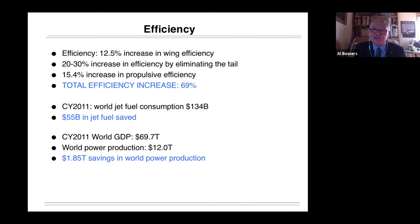Real quick, there's a total efficiency increase. If you do everything, the increase in the wing efficiency, eliminate the tail, and then increase the propulsive efficiency. For aircraft, the total efficiency increase is almost 70%. In 2011, world jet fuel consumption was about $134 billion. I think today it's about $180 billion. Last year, of course, was a disaster for everyone. But the current consumption rate is right around $180 billion. At that time, $134 billion, we could have saved about $55 billion in jet fuel. If you had applied this to turbines and power production, the world GDP in 2011 was about $70 trillion. World power production that year was $12 trillion. And we could have saved about $1.85 trillion in power production because of the improved efficiency of turbines using this idea.